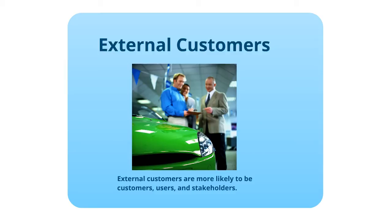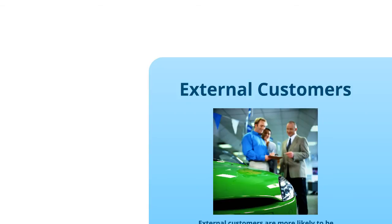External customers are more likely to be customers, users, and stakeholders. As we said in previous lessons, customers are those who exchange money for goods and services, and consumers are those that actually use the product — they may or may not be the same person. According to Blythe, stakeholders are people who are impacted by corporate activities. An obvious stakeholder might be a shareholder with voting rights at annual general meetings. A less obvious stakeholder would be the person who owns the land next to the factory, or the family supported by someone who works at the warehouse. A connected stakeholder is one with a direct association with your business, such as a supplier or shareholder, whereas other stakeholders — like the local community — have a weaker connection.